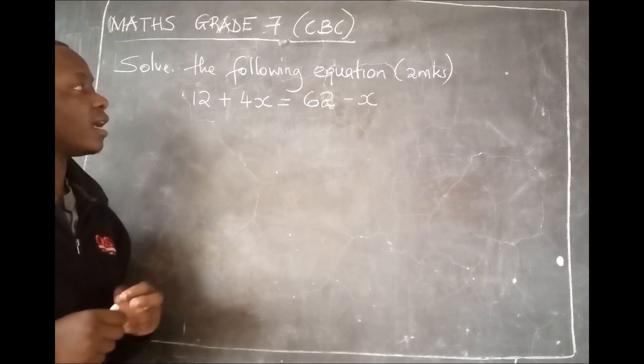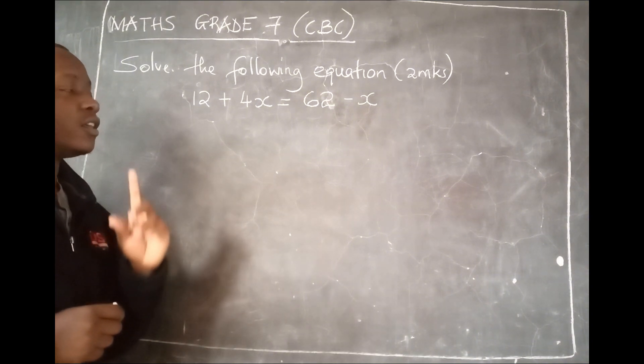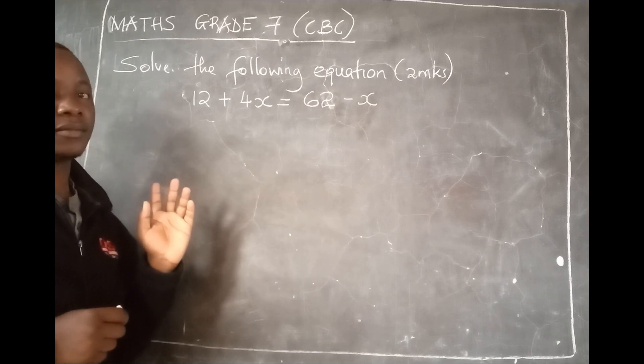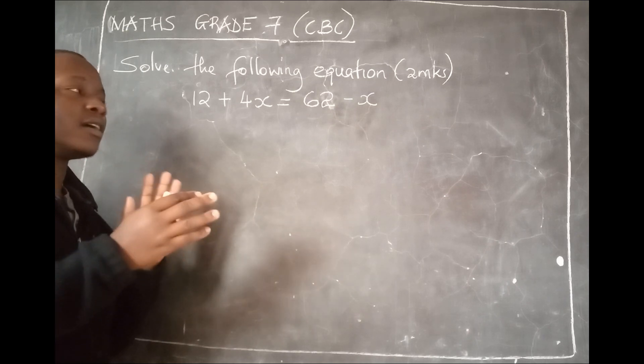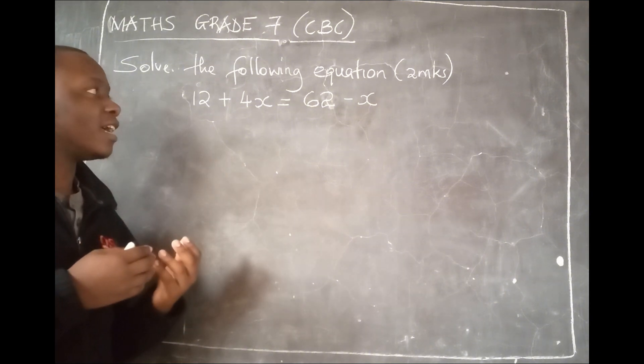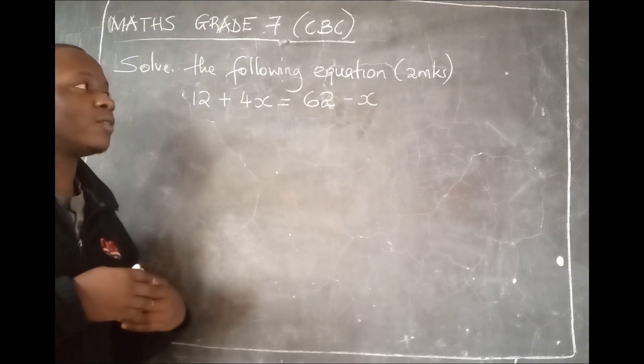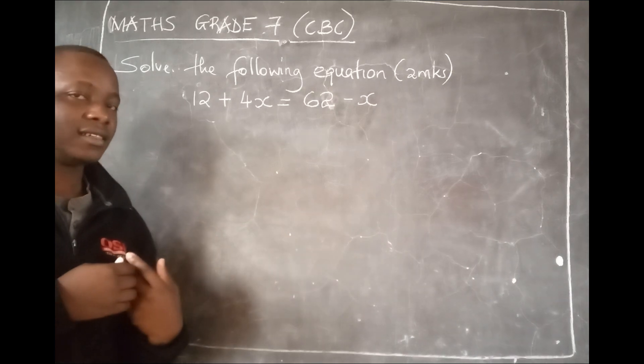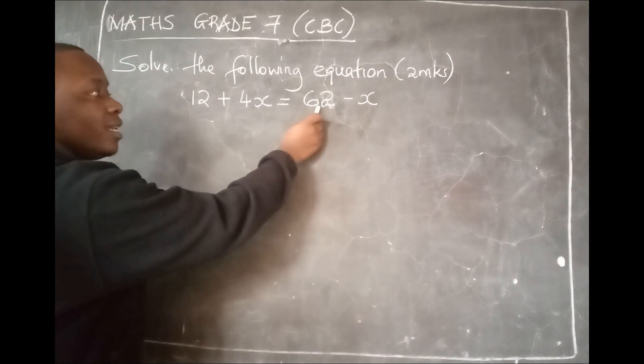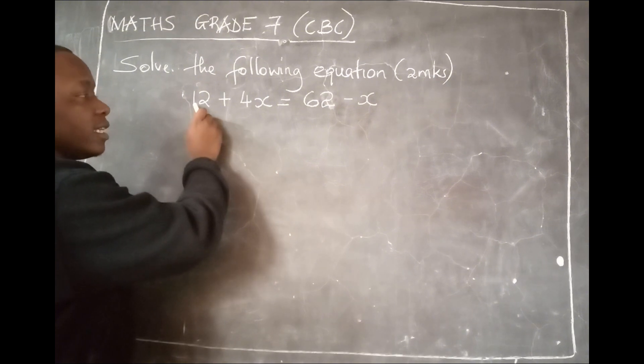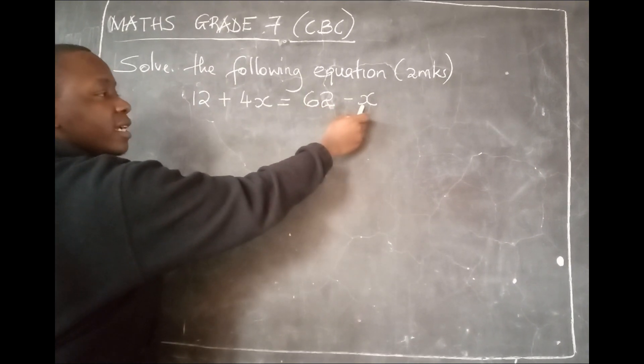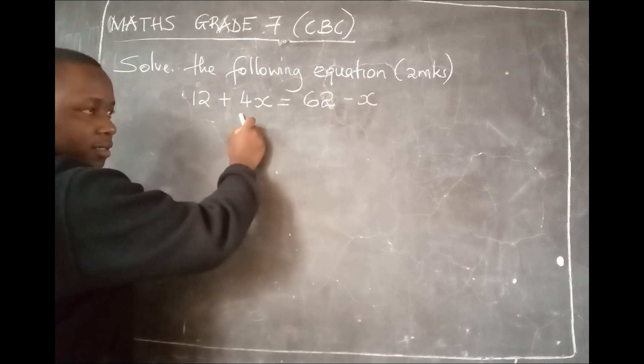Now, I want to show you a trick. If there are like terms, you give the bigger term its respect by bringing the smaller term to each side. This is what I mean. For example, 62 is bigger than 12, so I'll take 12 to the other side. 4x is bigger than x, so I'll bring x to this side.